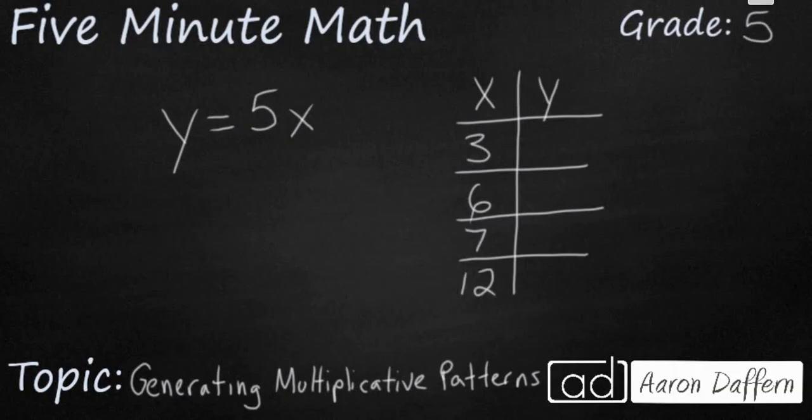And so this equation here means that I'm going to take my x value. And remember, whenever you see a whole number next to a variable or an unknown represented by a letter, that always means multiply. I'm going to take my x value and I'm going to multiply it by 5. And that is going to get me my y value.